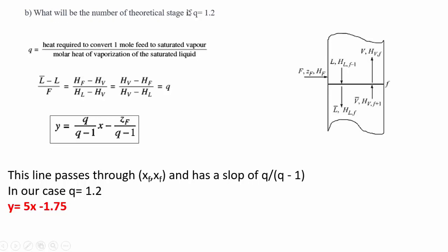On our question, what will be the number of theoretical stages if q is equal to 1.2? You substitute the value of q as 1.2 and the value of xf — the mole fraction of cyclopentane — is 0.35. When you substitute into this equation, you get y = 5x − 1.75 as your operating line for the feed.